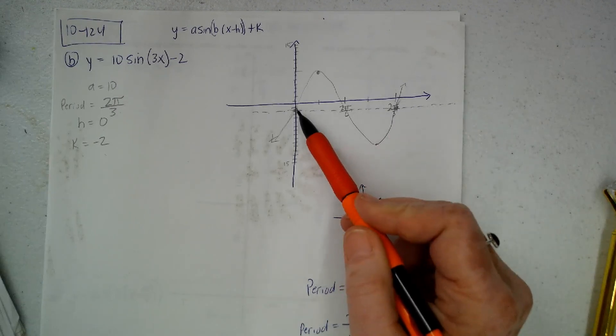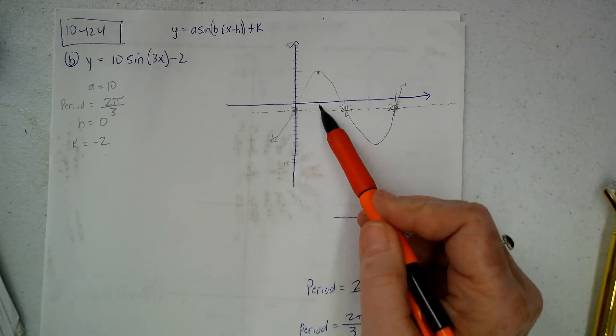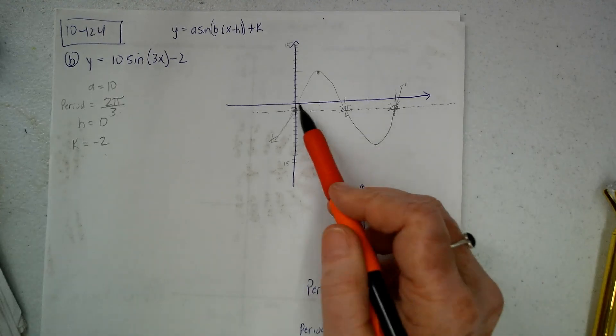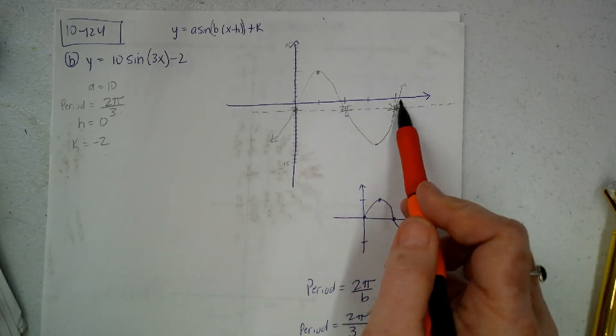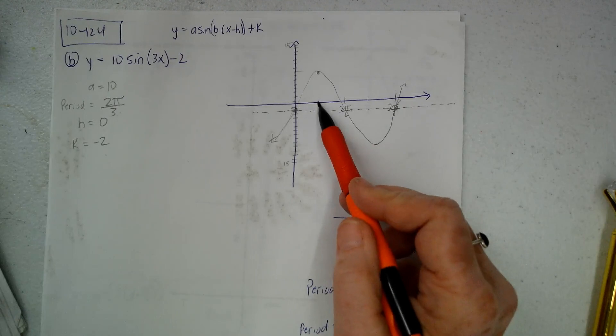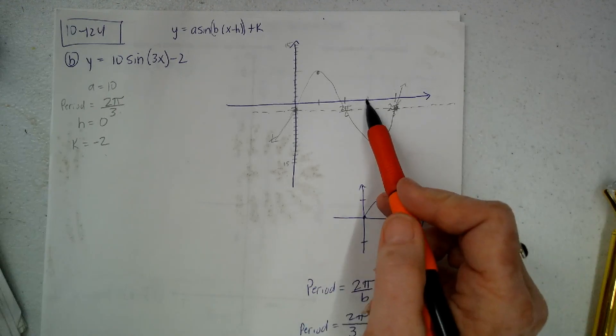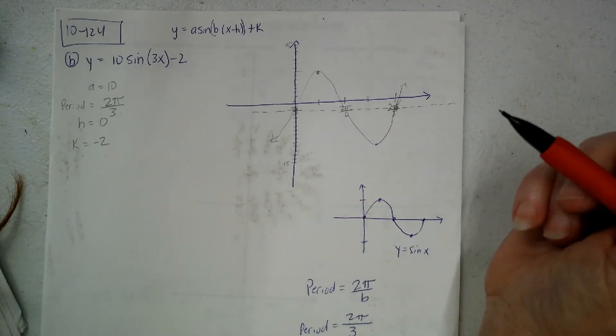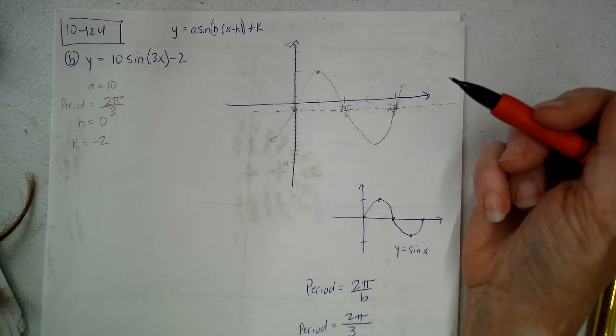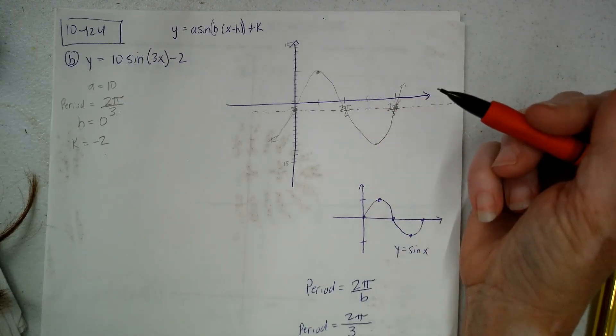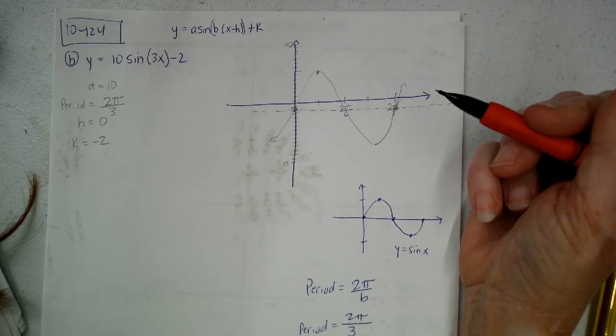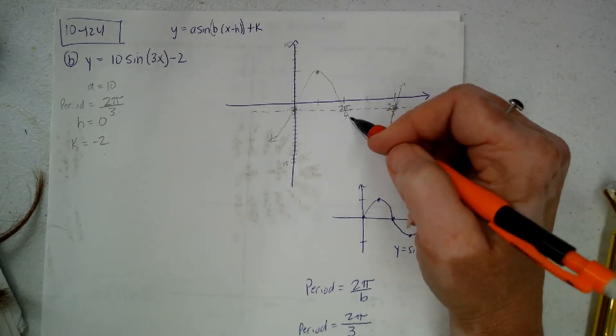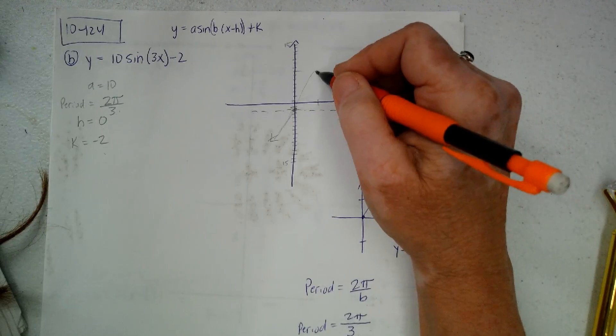So that's easy. So what I did is I counted by π. I counted π over 3, 2π over 3. And then I just put some middle points in there. This is π over 3. I don't know why I wrote it as 2π over 6.